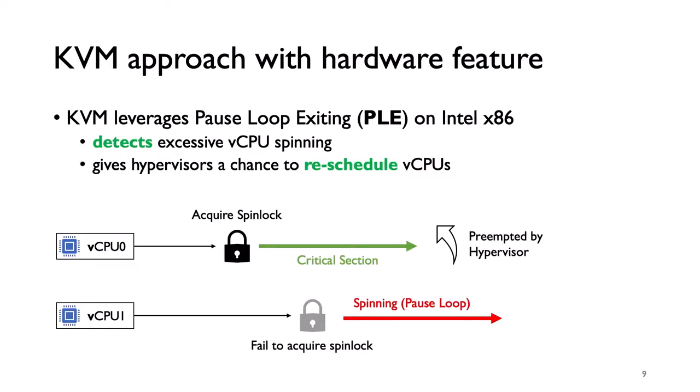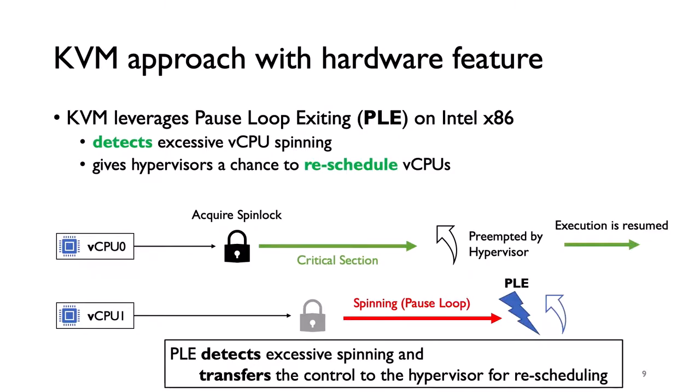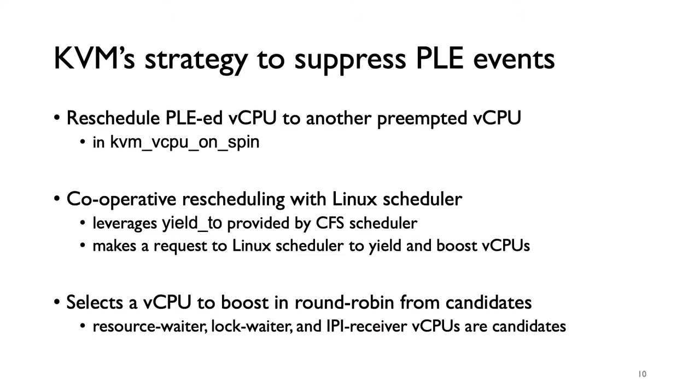KVM leverages a hardware feature to mitigate excessive spinning on Intel x86. The hardware feature is called Pause Loop Exiting, PLE for short. PLE can detect excessive spinning and transfers control to the hypervisor for rescheduling. The current KVM strategy to suppress PLE events is basically rescheduling a spinning vCPU to another preempted vCPU. This is performed with the Linux scheduler by leveraging the yield2 function provided by the Linux CFS scheduler.